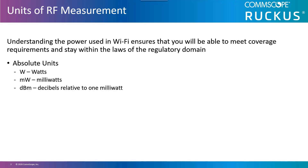The radios used in Wi-Fi are able to both detect and process very weak signals. And when dealing with these weak signals, it is easier to refer to the received signal strength indicator values in dBm rather than in milliwatts.